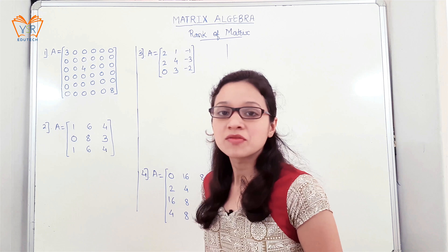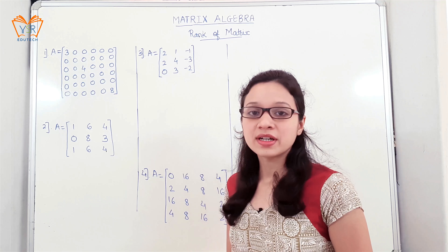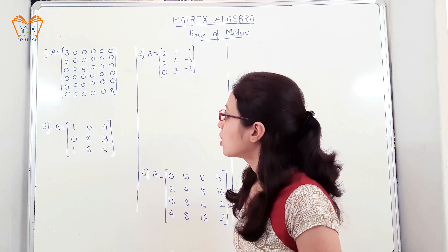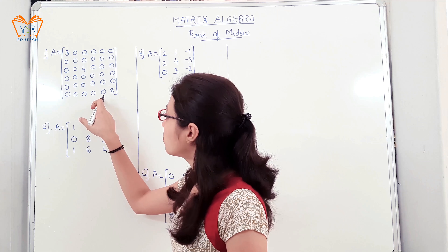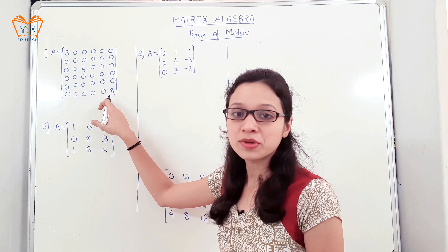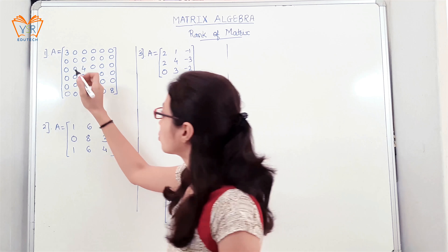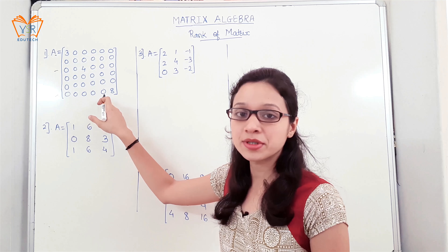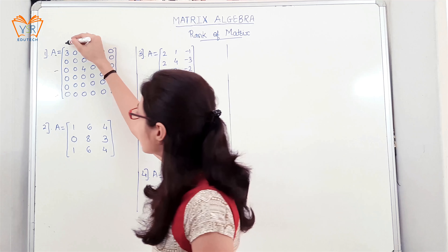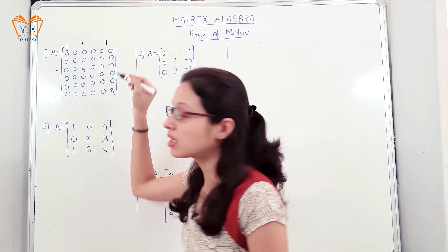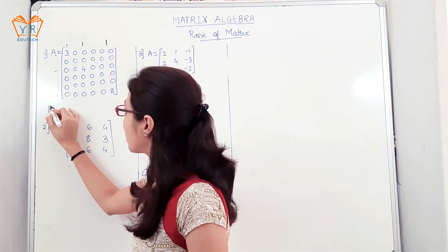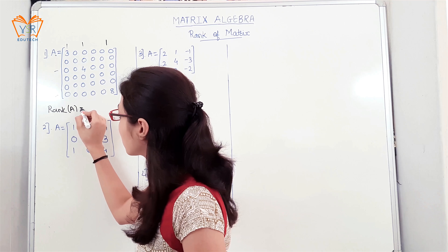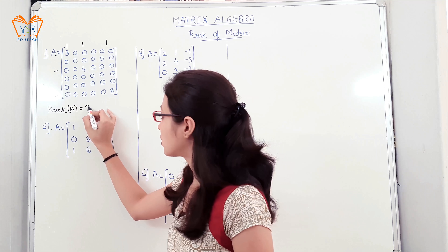In the first example, we know that rank of a matrix is defined as the maximum number of linearly independent rows or columns in a matrix. Here there is no need to perform — in fact no elementary operations can be performed. If we observe, row 1, row 3, and the last row are linearly independent rows, or the first, third and last columns are linearly independent columns. As there are three independent rows or three independent columns, we can conclude that rank of matrix A is 3.